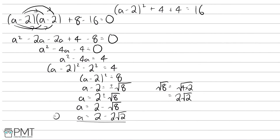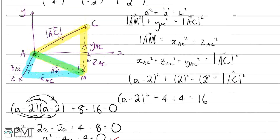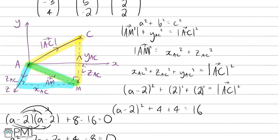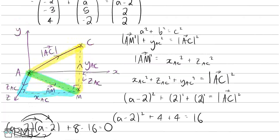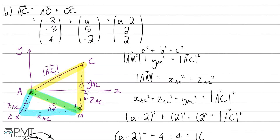That's our final answer. In terms of marking, you get one mark for the final answer, one mark for reaching the quadratic, and one mark for finding AC, for a total of three marks.